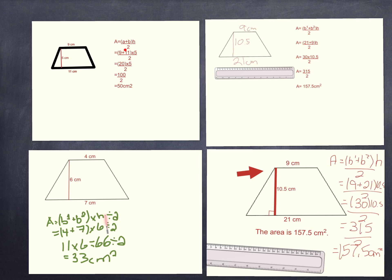I put base 1 and base 2 with 21 plus 9 times height divided by 2. To get the area of the trapezoid, I have to divide 315 by 2, and that gets me 157.5 centimeters.